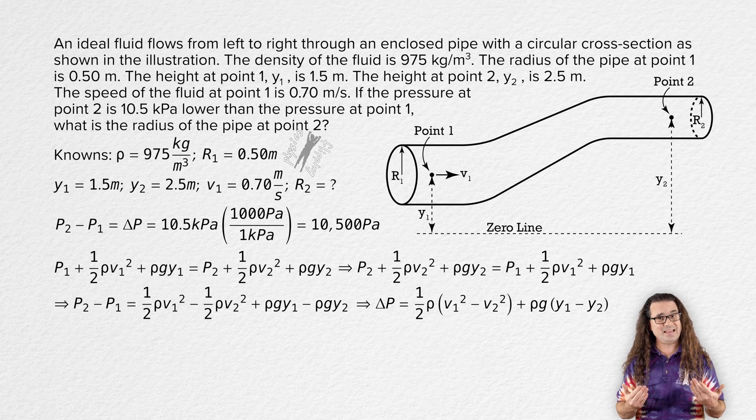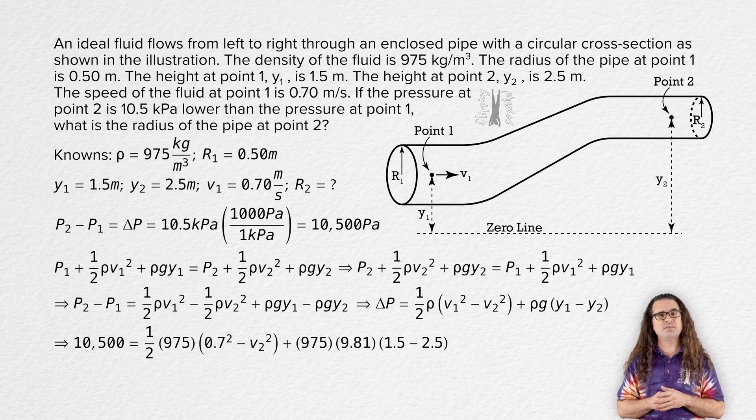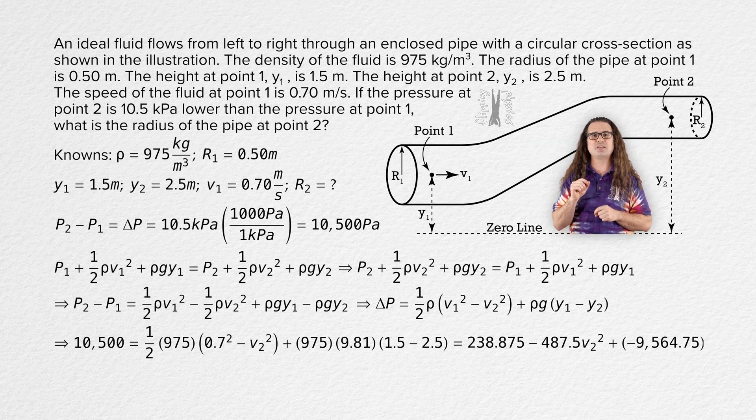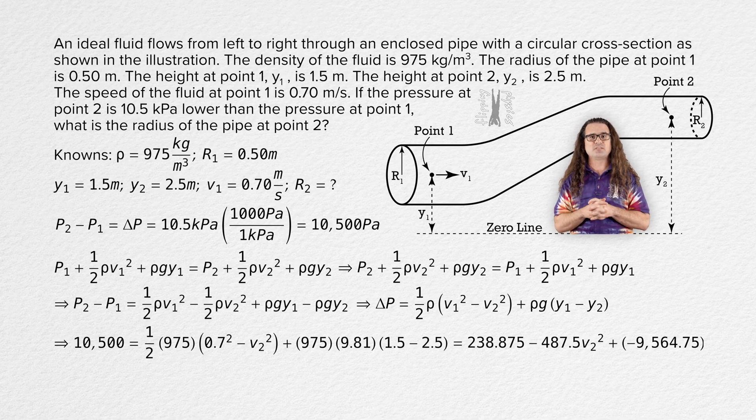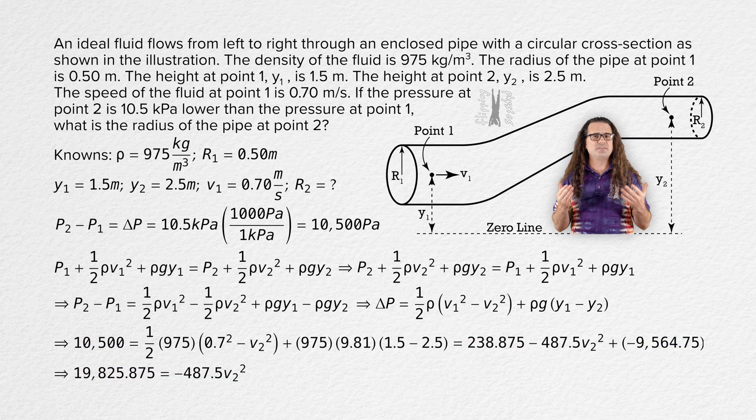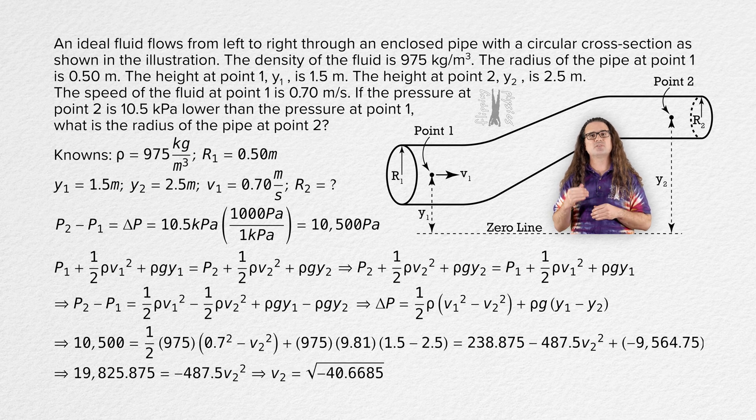And we can substitute in numbers to get 10,500 equals one half times 975 times the quantity 0.7 squared minus the speed at point 2 squared, that quantity plus 975 times 9.81 times the quantity 1.5 minus 2.5. Multiplying through on the right hand side gives us 238.875 minus 487.5 times speed at point 2 squared plus negative 9564.75. Bringing all the terms which do not include speed at point 2 in them to the left hand side of the equation gives us 19,825.875 equals negative 487.5 times speed at point 2 squared. Dividing both sides by negative 487.5 and taking the square root of the equation gives us speed at point 2 equals the square root of negative 40.6685. And that equals… Error?